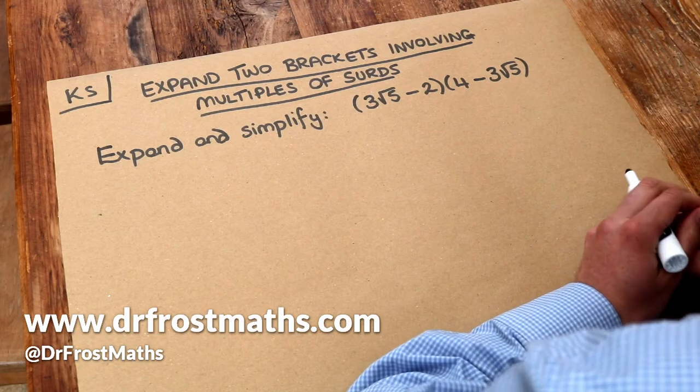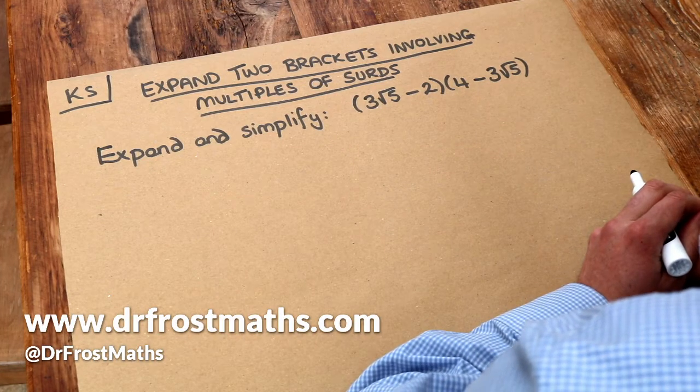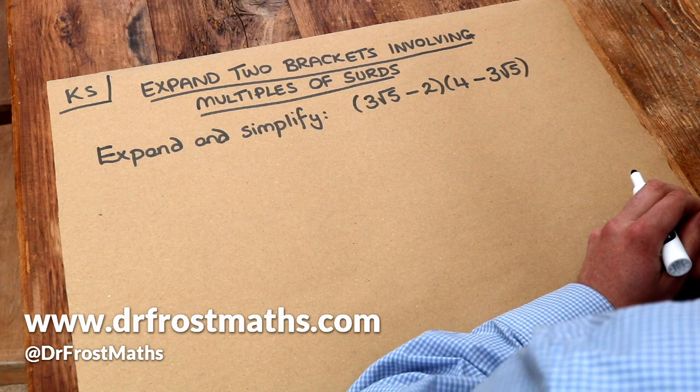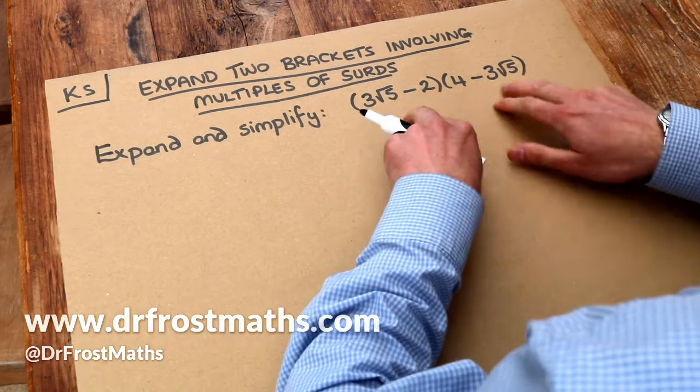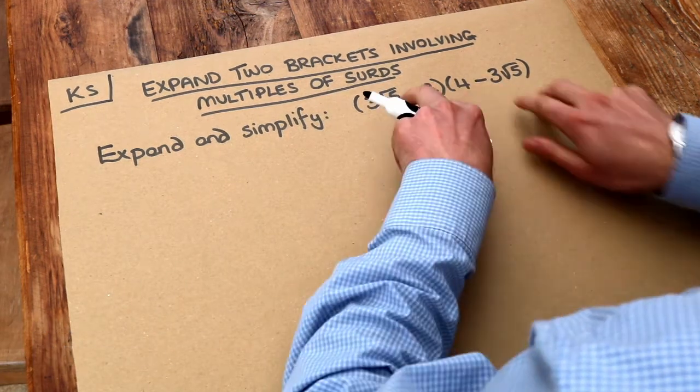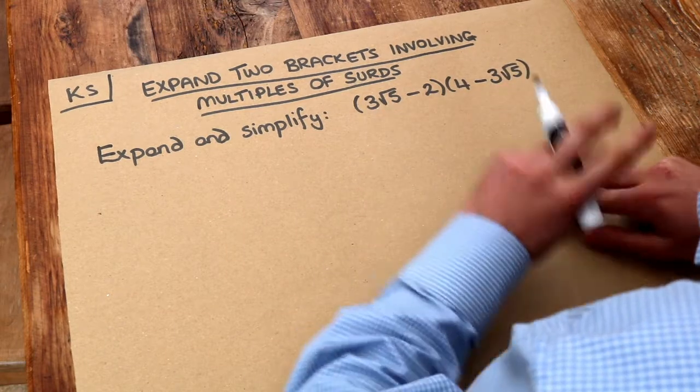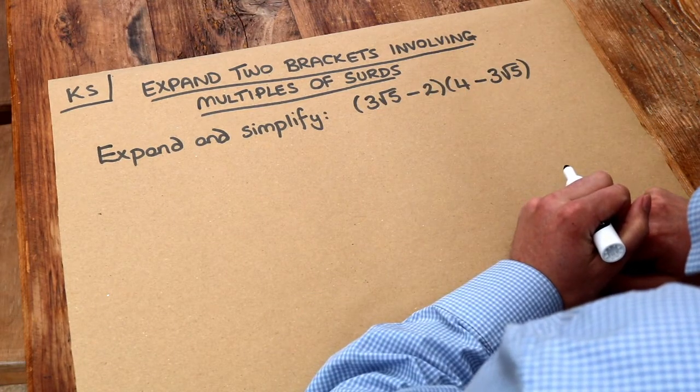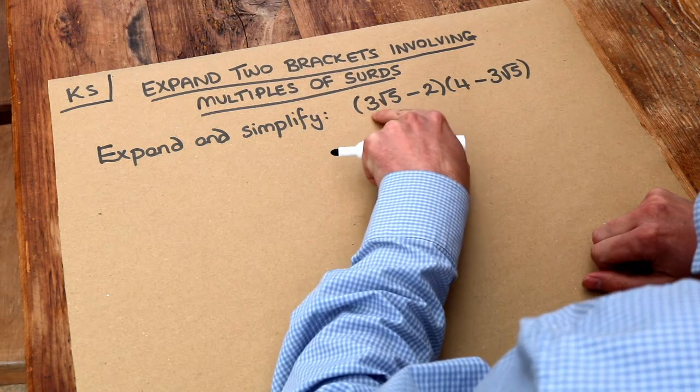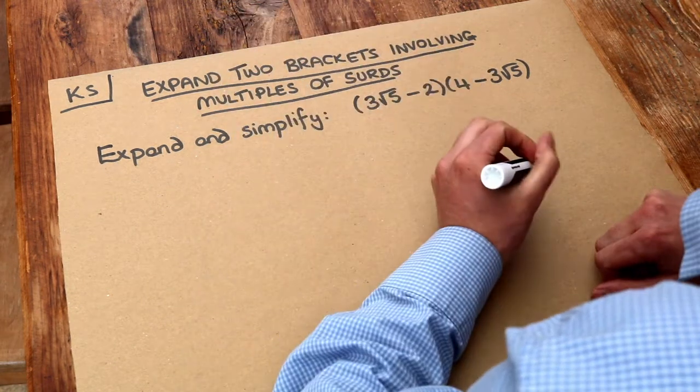Hello and welcome to this Dr. Ross-Math's key skill video on expanding two brackets involving multiples of surds. Now we covered an example like this in the previous video where we had two brackets, we expanded them out, and we have to do some subsequent simplification. The only difference here is that we have numbers in front of the surds, so it's three lots of root five rather than just root five.